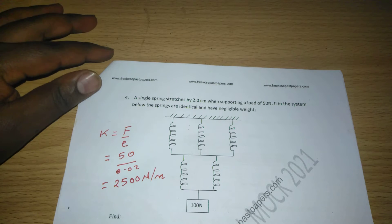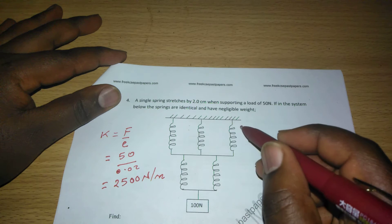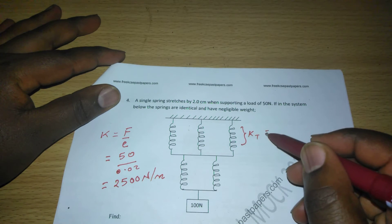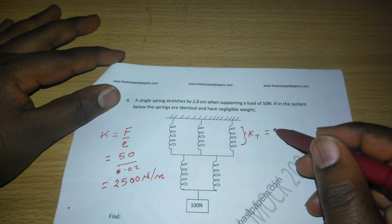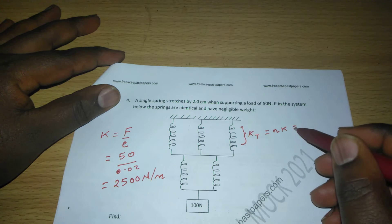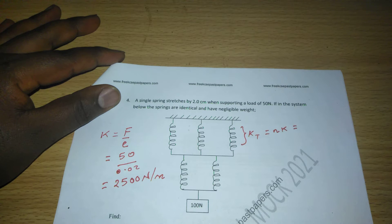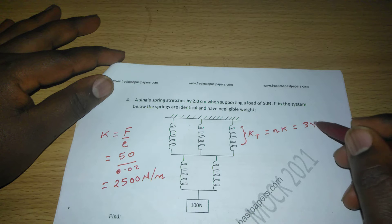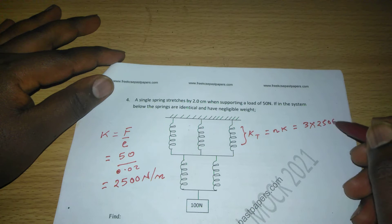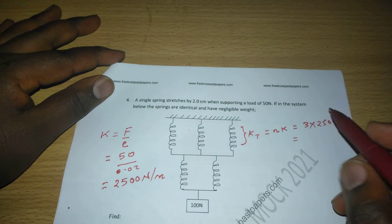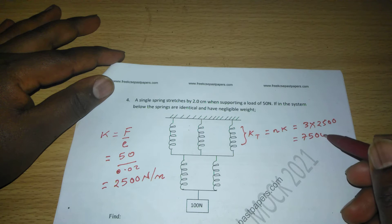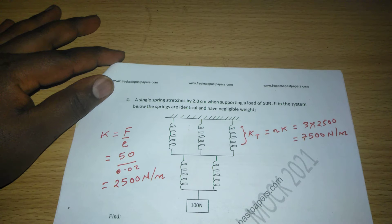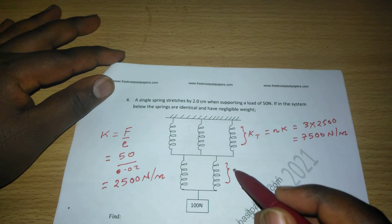Now we can find the spring constant of the combination. When springs are in parallel, as in this case, the total spring constant is given by the number of springs multiplied by the spring constant of each individual spring.